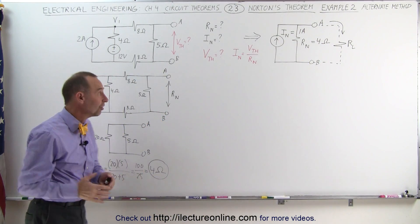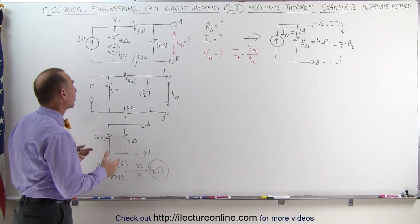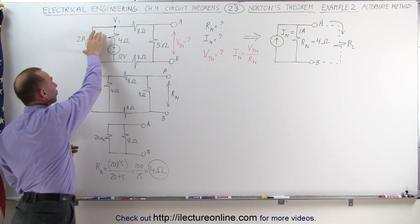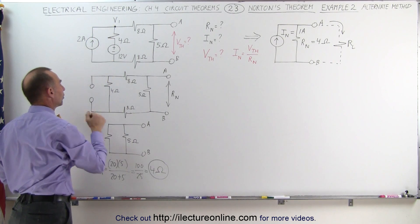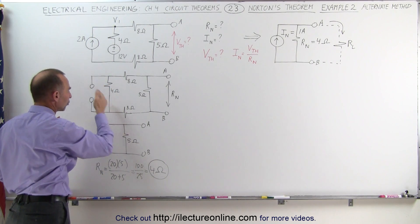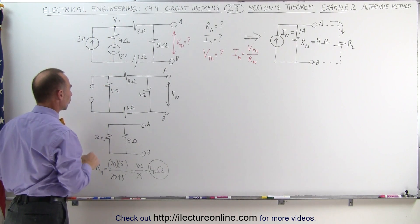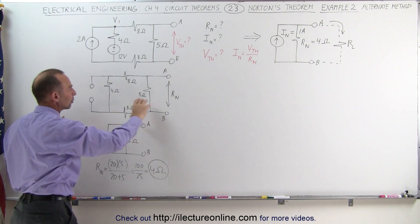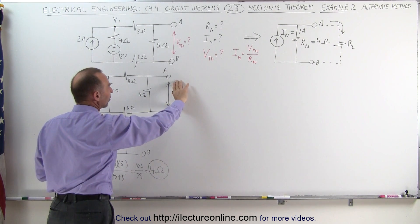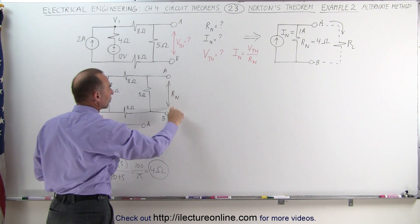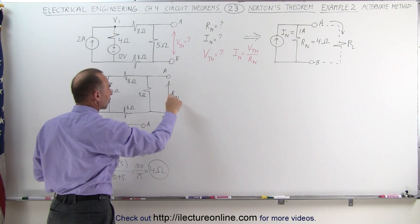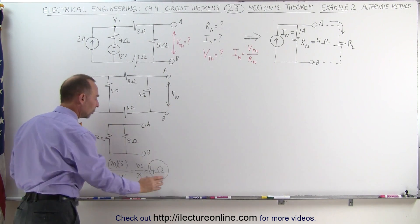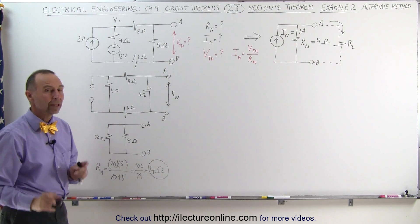To find the Norton resistance is exactly the same: we remove the current source, we set the voltage source equal to 0 — in other words we short out the voltage source — and then with the remaining circuit we find the Norton resistance by measuring the resistance between terminals A and B. When we did that we ended up with 4 ohms.